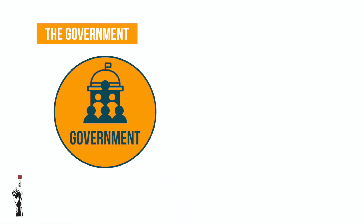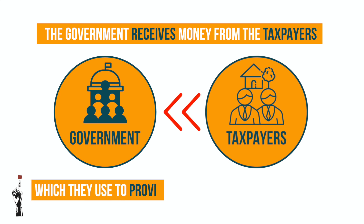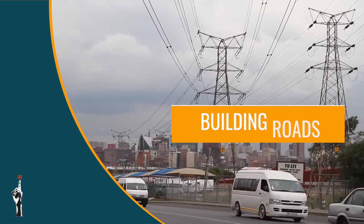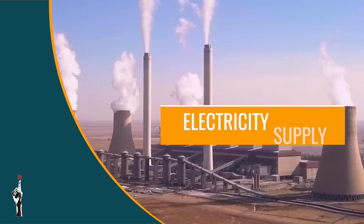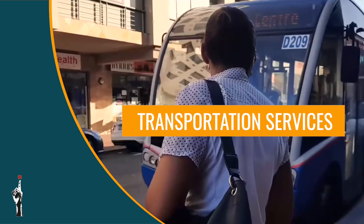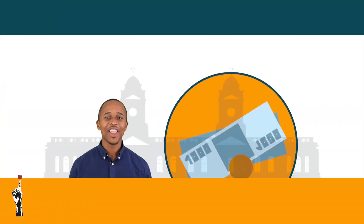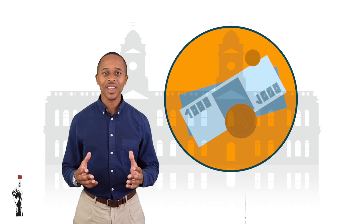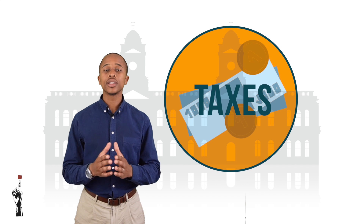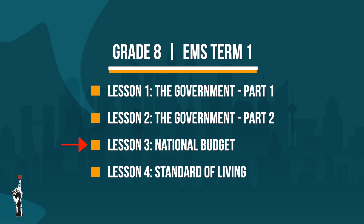The government receives money from taxpayers, which they must then use to provide services such as infrastructure — building roads and bridges — electricity supply, transportation services, healthcare, and education, just to name a few. There are also different ways in which the government can obtain taxes from citizens; however, we will discuss this in more detail in lesson three when we discuss the government budget.